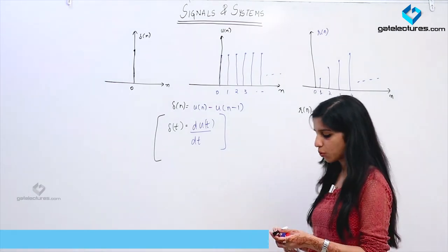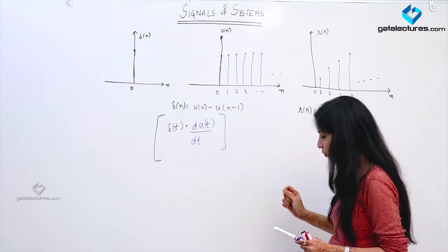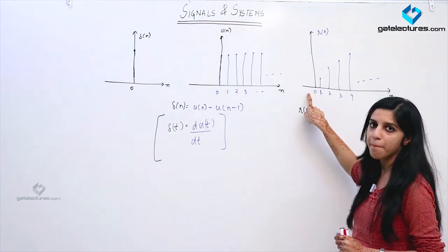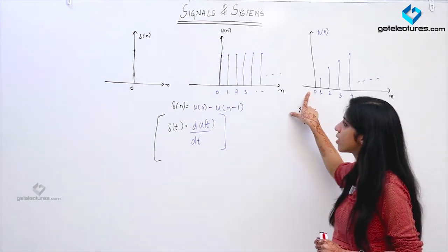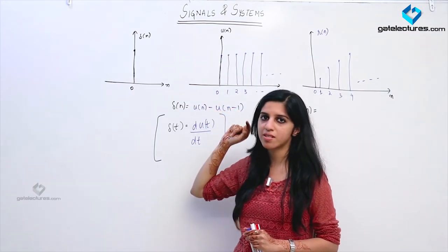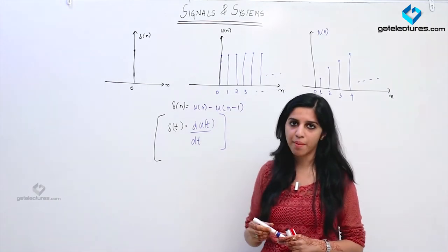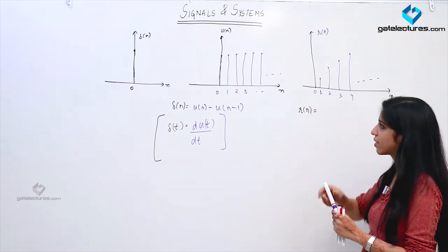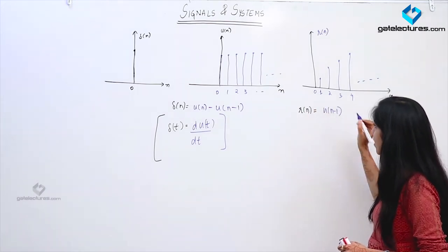One precaution I need to take is that the unit ramp function does not have any impulse at n equal to 0. We are not having anything at n equal to 0, whereas in the unit step signal, the value is 1 at n equal to 0, which is not required in the unit ramp. So if I want to express it as a sum, I am going to start from u[n-1].